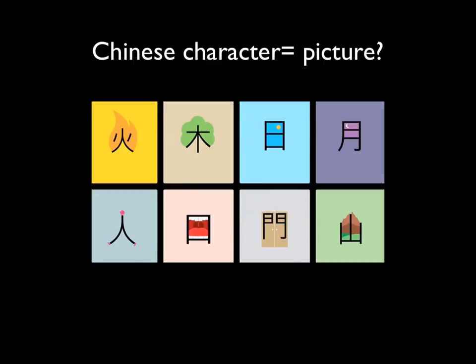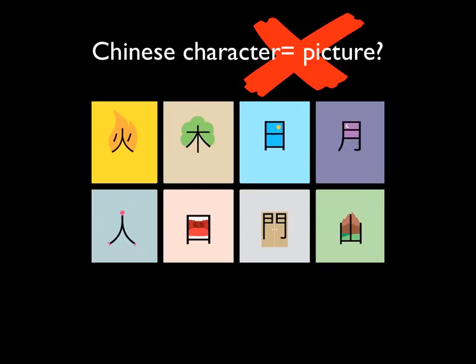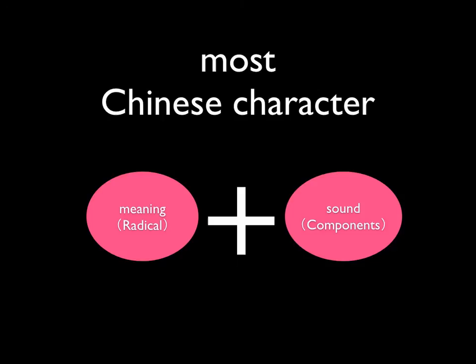Many people might still think Chinese character equals picture, because many people think the characters come from the old drawings. That is partially true. The original characters are from the pictures. But people cannot spend the whole day just drawing pictures to write messages. So eventually, people got smarter — they put different characters together to compose a new character. So that saying is not true. Most characters actually have two parts: one is the meaning part, one is the sound part.